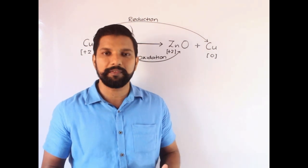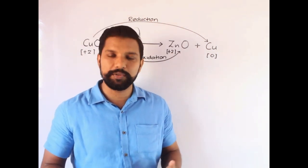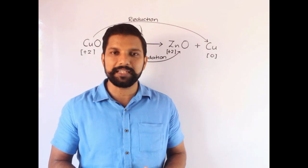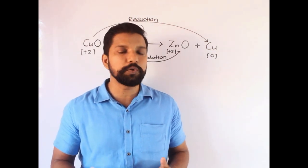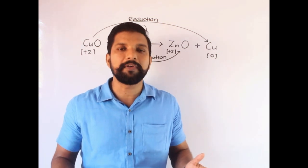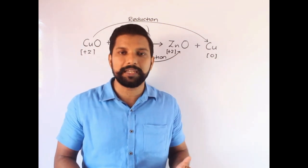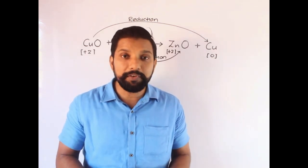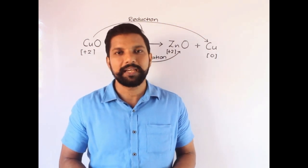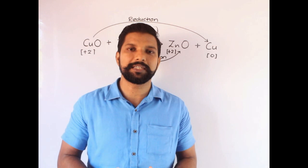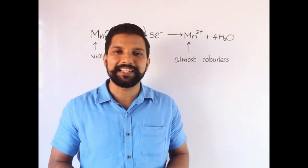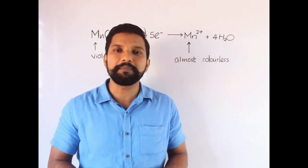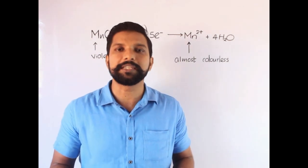A redox reaction must have both an oxidizing agent and a reducing agent. In the laboratory we have some common oxidizing agents and reducing agents used in both qualitative and quantitative analysis. The most widely used oxidizing agent in laboratory experiments and industrial applications is potassium manganate(VII), commonly known as potassium permanganate.